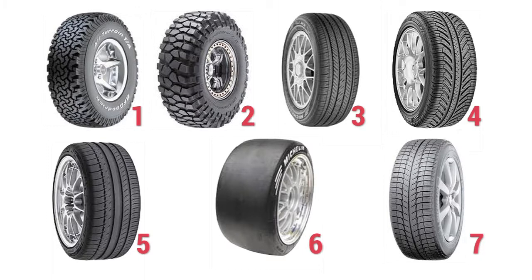What does high tread-to-void ratio mean? Tire number six has all tread, whereas tires number two and one have large amounts of openness. When a tire has openness, it's very good for adverse conditions like rock climbing or driving through mud, but it will not be a very quiet tire. Tire number seven, by contrast, will be quiet and give excellent traction in winter. So now that we understand a little more about tread design, how does this affect the customer standing before you?